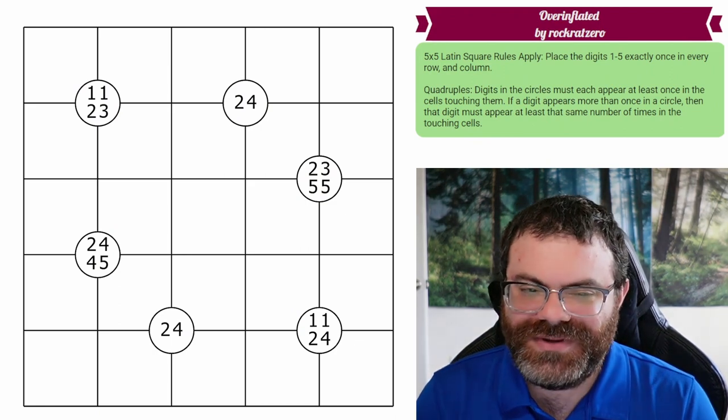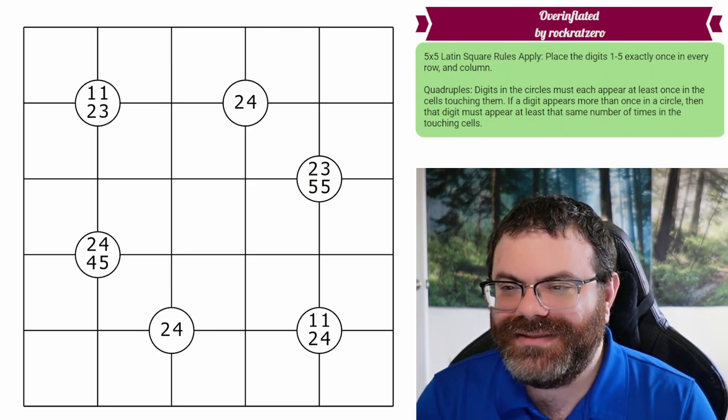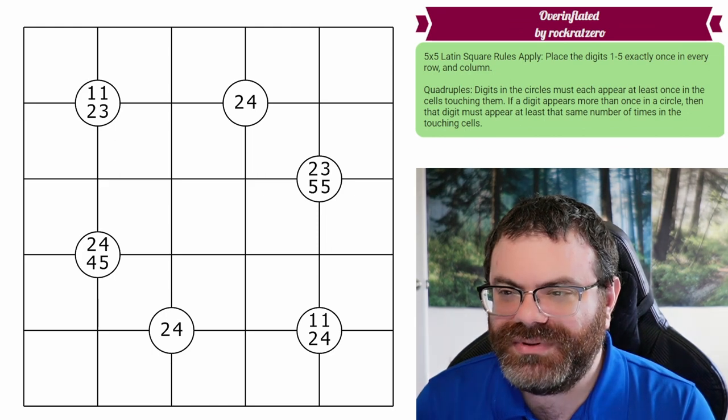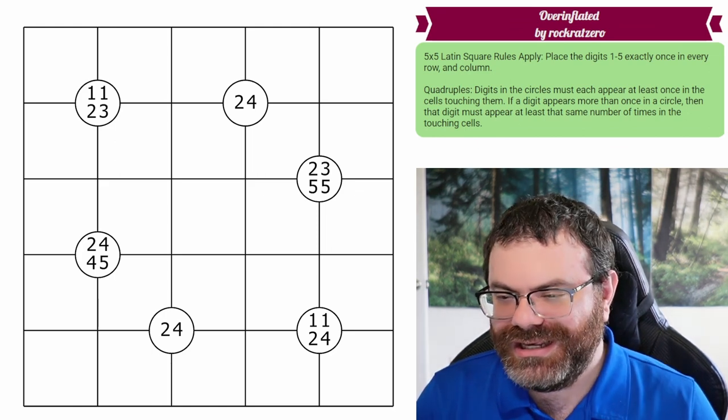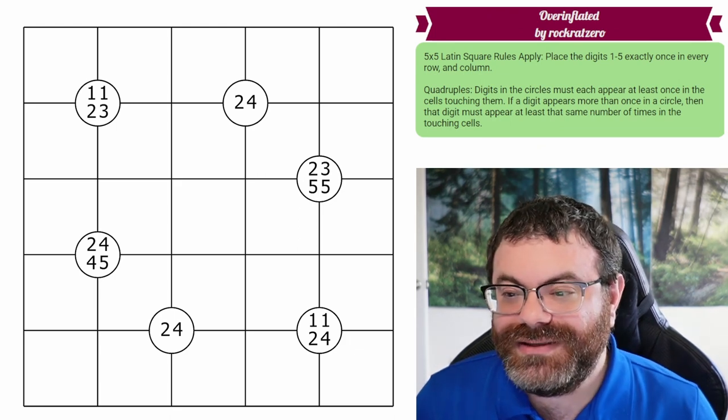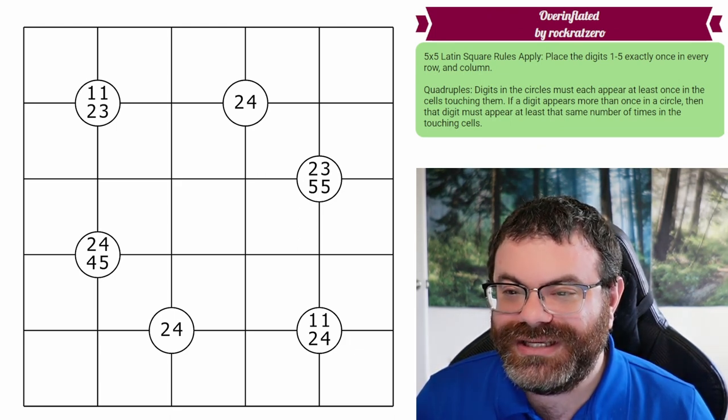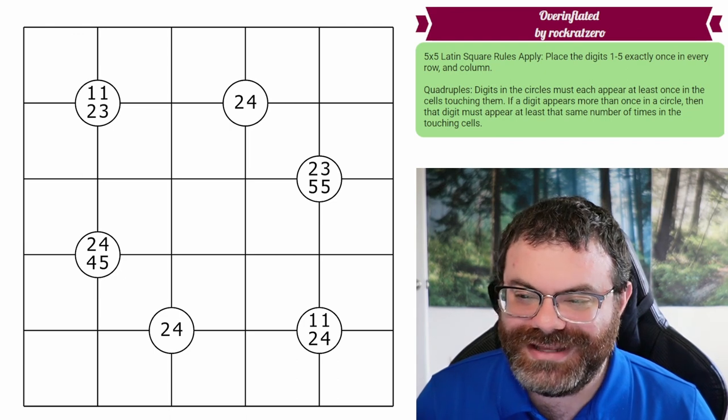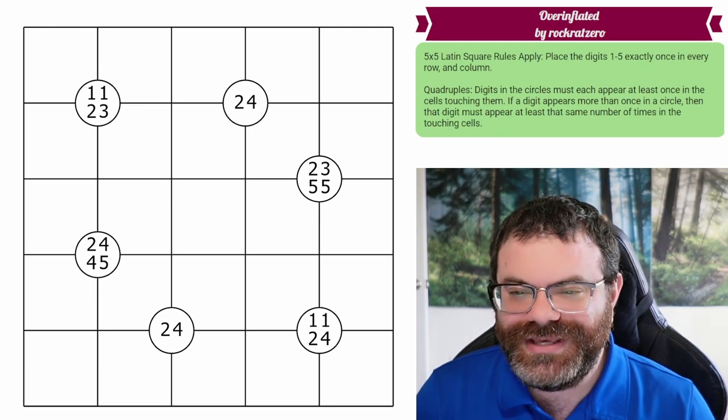This came as a bit of a surprise when I opened it because I thought we were going to do quads plus an additional constraint for all these additional quad-week puzzles, but I think this is fine. RockRat0 interpreted that to mean he could do a 5x5 Latin square as the additional constraint. So this should be interesting.